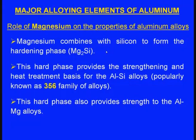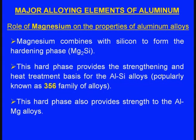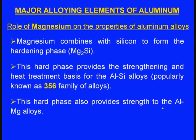The next major alloying element is magnesium. Magnesium combines with silicon to form the hardening phase magnesium silicide (Mg₂Si). This is a very hard phase; because of that, the alloy develops good strength and also wear resistance. This hard phase provides strengthening and heat treatment basis for the aluminum-silicon alloys, popularly known as the 356 family of alloys. This hard phase also provides strength to the aluminum-magnesium alloys. So magnesium typically forms the hardening phase, thus it induces strength to the alloy.